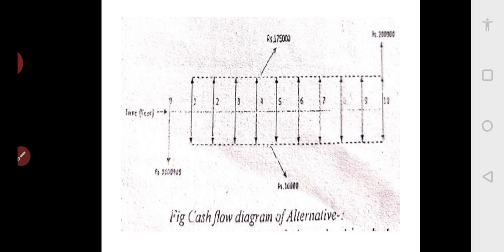Now let us see the cash flow diagram for alternative 1. The horizontal line represents 10 years — from 0 to 10. At year 0, I am spending 10 lakh rupees, shown as a downward arrow (outflow). From year 1 to year 10, the maintenance cost is 10,000 rupees every year, shown as 10 downward arrows. These are all outgoing expenditures shown with downward arrows.